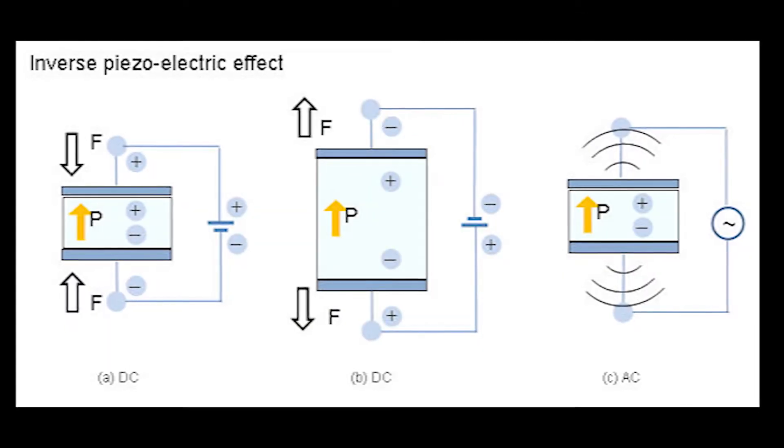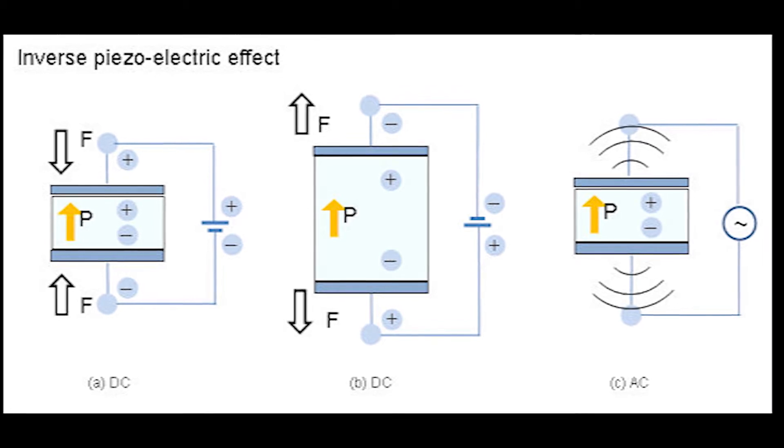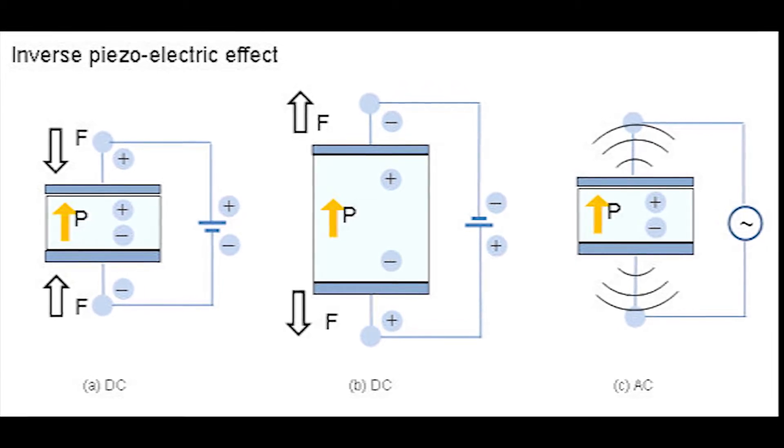The opposite effect, called converse piezoelectric effect, is where electricity is applied to the material, which then causes it to bend slightly.